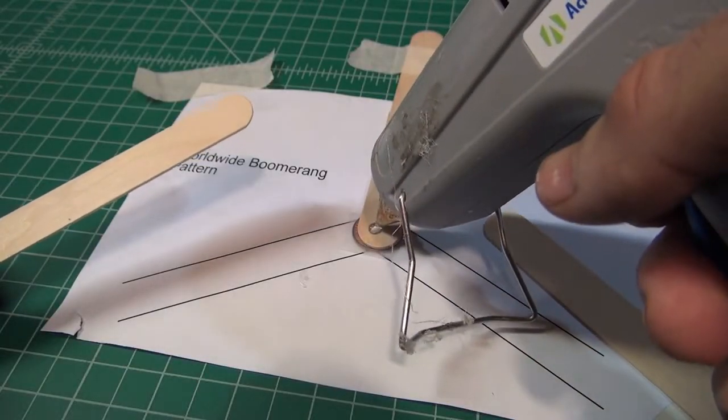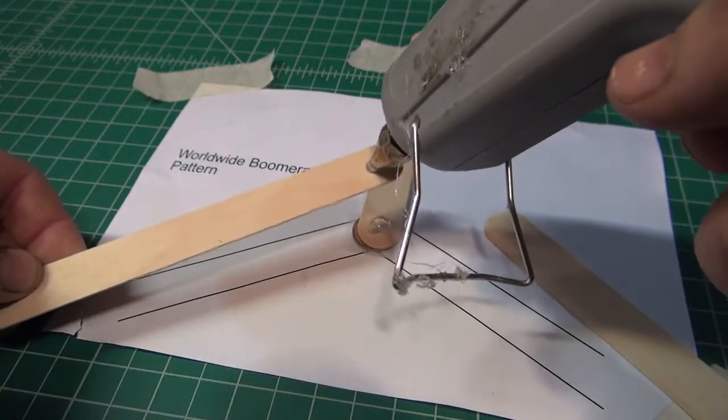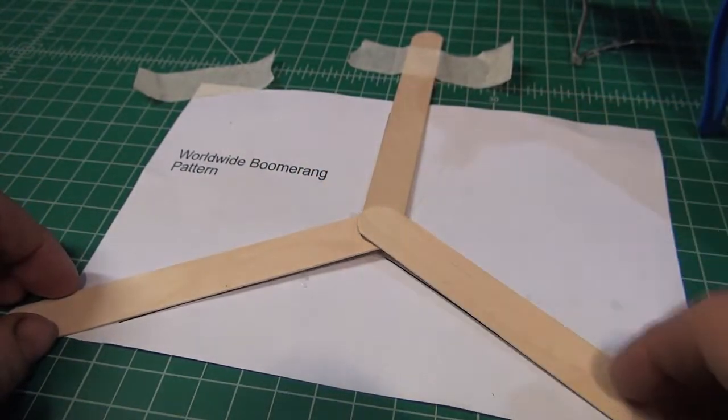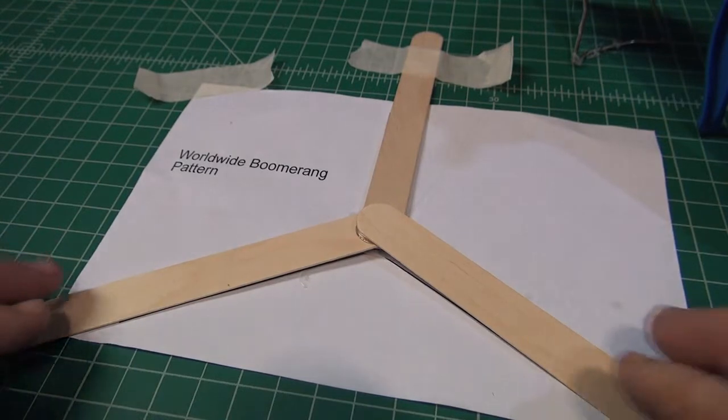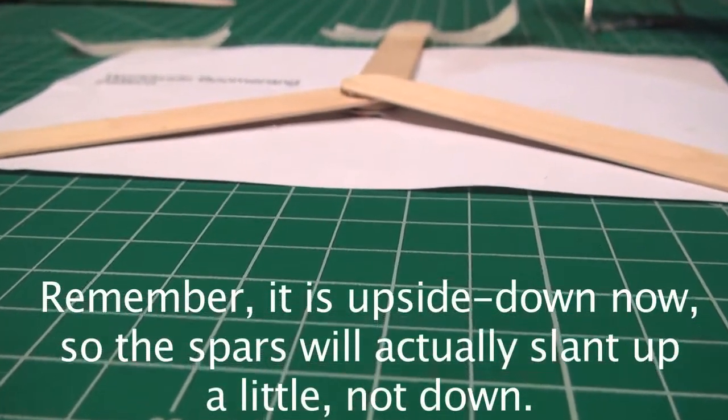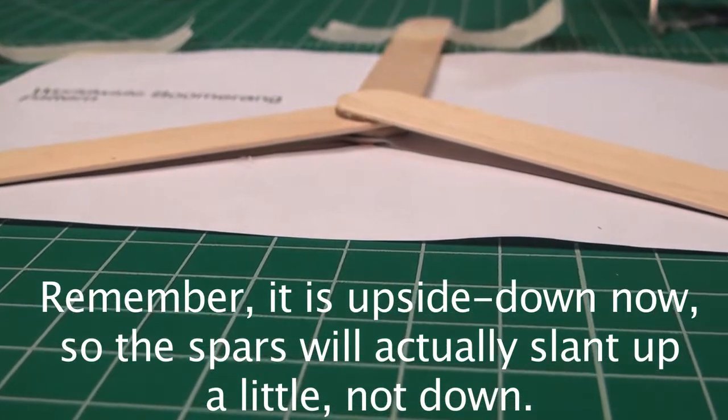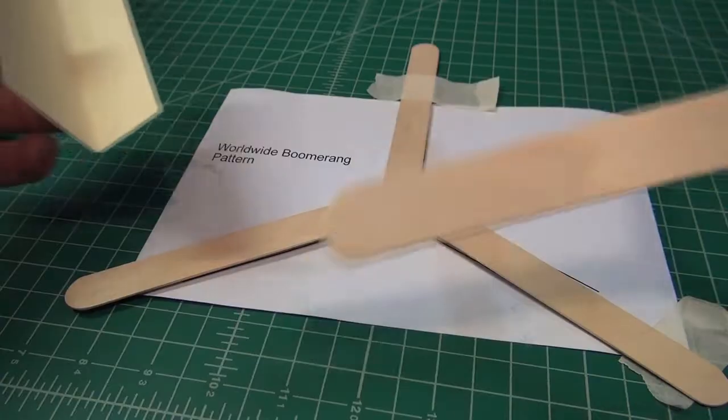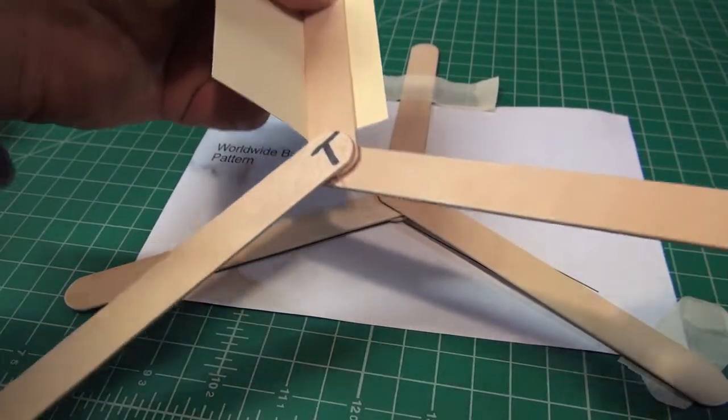I get glue on both tongue depressors at the same time and make sure I press on the hub to make a good glue connection, but also at the other ends so they slant down a little to the table for dihedral. Even hot glue ought to have half a minute or so to harden, so I start working with previously glued spars.